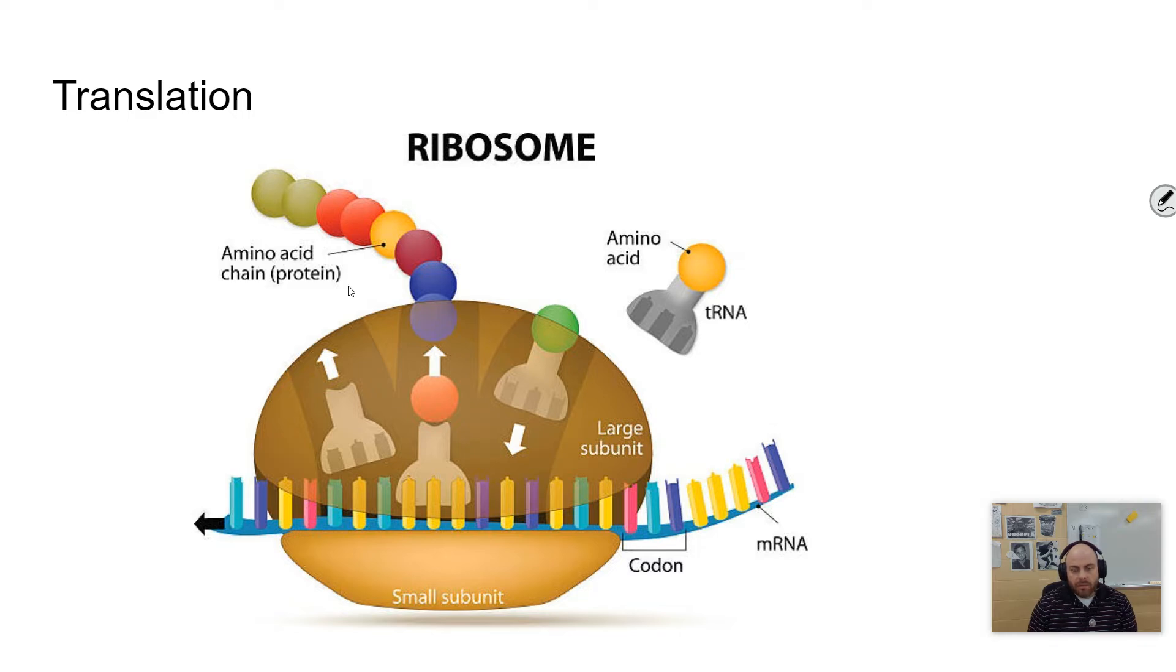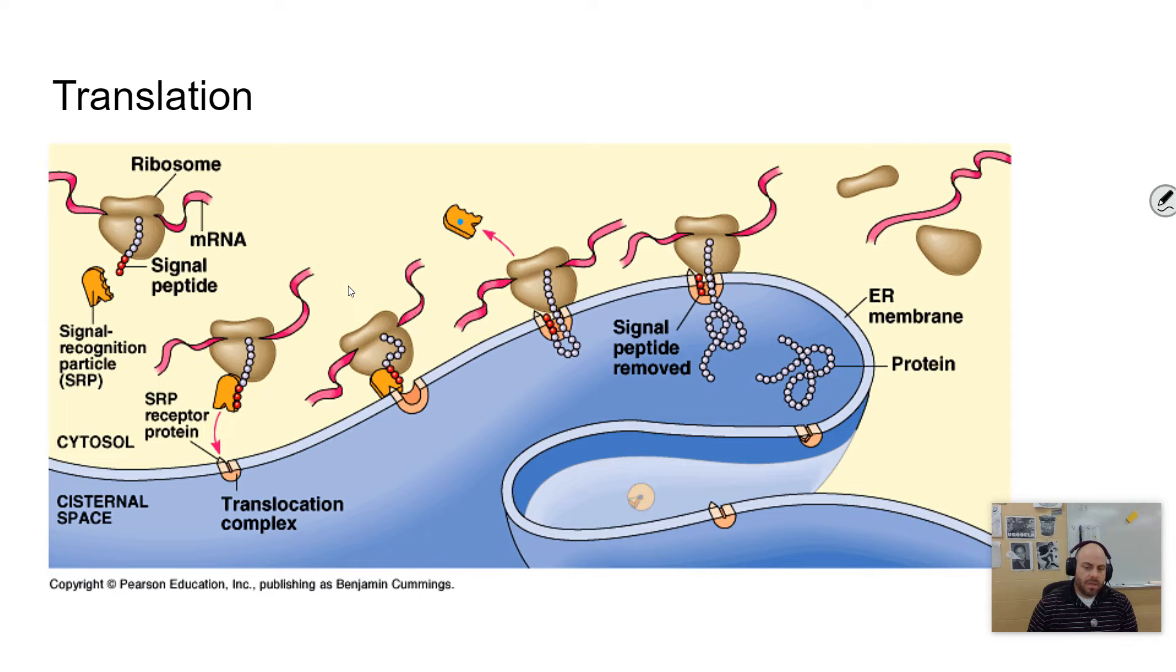In general, if a protein is made in the cytoplasm, it's going to stay in the cell. And if a protein is made on the rough ER, like you see here, that protein is likely going to be shipped out of the cell, because the rough ER is part of that packaging system, that endomembrane system, which packages and ships proteins out of the cell.